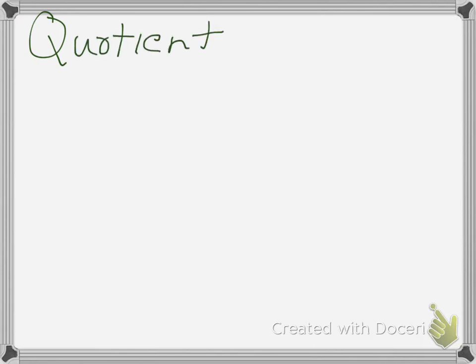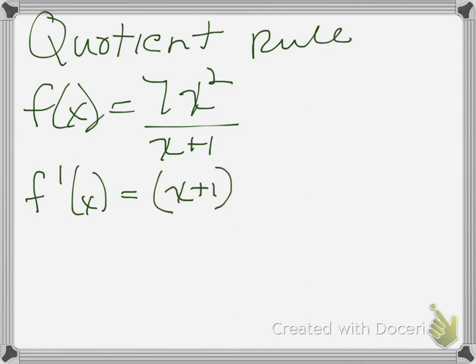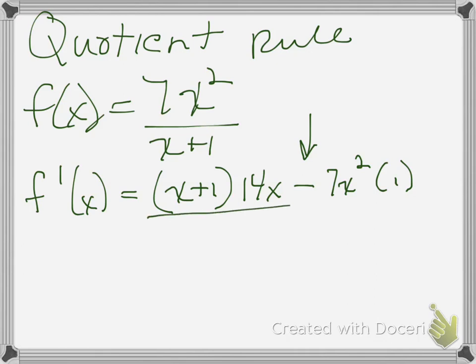Let's go on to the quotient rule. So let's say f of x equals 7x squared over (x plus 1). So f prime of x equals: low — put it in parentheses because you have more than one term and you're going to be multiplying — low d-high, d-high is just 14x, minus — don't forget this is a minus — high (7x squared) times d-low, which is just 1 because I just have x plus 1.